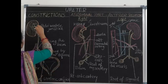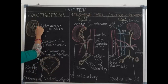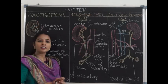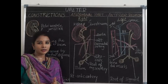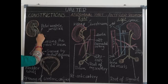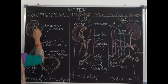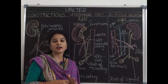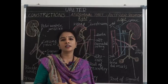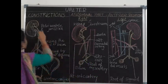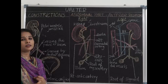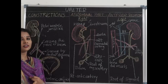At its origin, the ureter arises in the renal sinus from the hilum of the kidney, where minor calyces join to form major calyces and major calyces join to form the renal pelvis. At the hilum, the renal pelvis is related to the renal vessels. The arrangement in the hilum, from anterior to posterior, is: renal vein first, then renal artery, then renal pelvis — remembered as VAP.